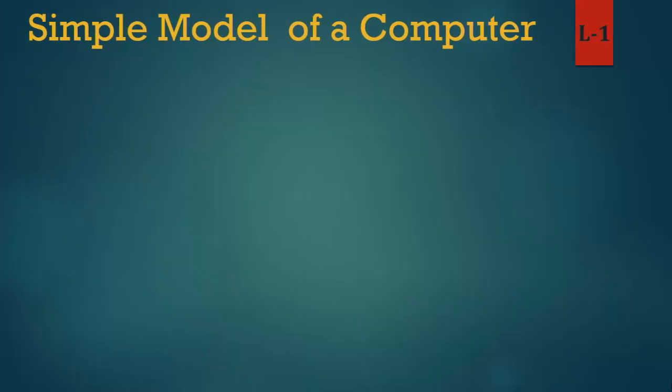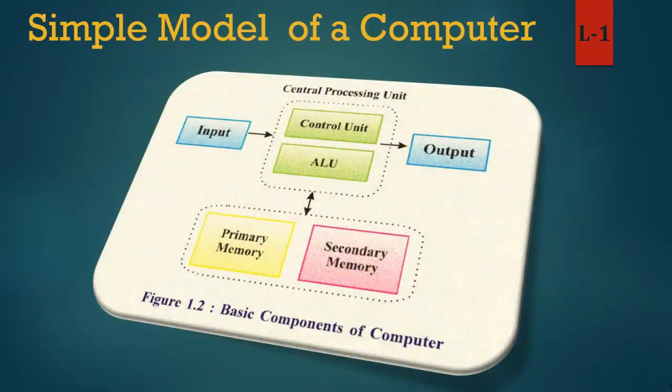In short, when we input data, the CPU processes it under the control unit and ALU. Control unit and ALU process primary memory and secondary memory. Then the CPU gives output to the user. Sankshep mein, jab hum data input karte hain, niyantran ikai aur ALU ke tehat CPU prakriya karta hai. Prathamik memory aur secondary memory. Tab CPU upyogkarta ko output deta hai.